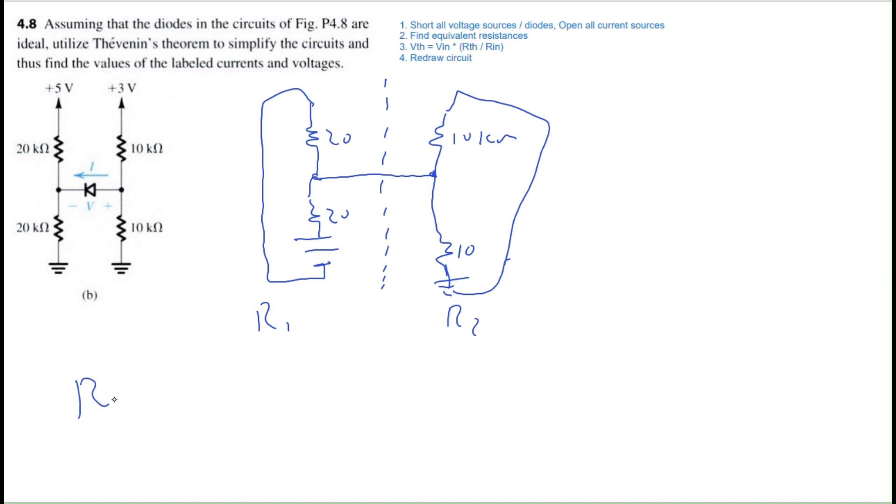R1, which is the equivalent resistance on the left side, will be 20 kilo ohms in parallel with 20 kilo ohms. As I said in the last problem, when it's two of the same valued resistors in parallel, it's just half of it. Therefore, R2 is equal to 10 kilo ohms parallel with 10 kilo ohms, which is 5 kilo ohms.